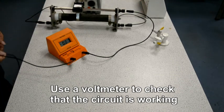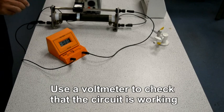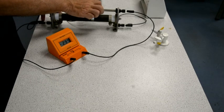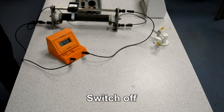Add a voltmeter to the circuit so that you can check that it's working. By sliding the slider backwards and forwards, you should be able to get a range of voltages somewhere between 0 and 4.5 volts. Turn off.